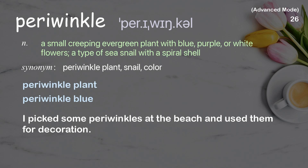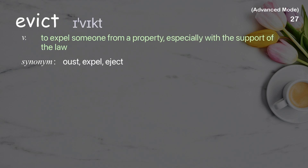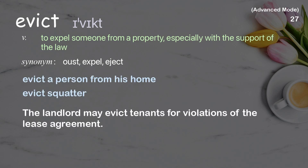Periwinkle: A snail with a spiral shell. Examples: Periwinkle plant. Periwinkle blue. Evict a person from his home. Evict squatter. The landlord may evict tenants for violations of the lease agreement.